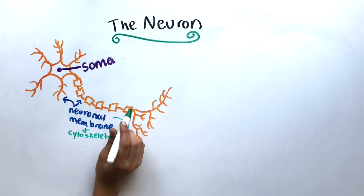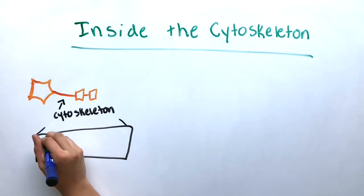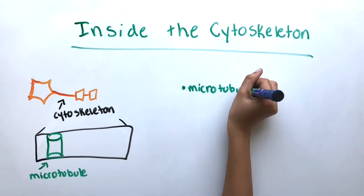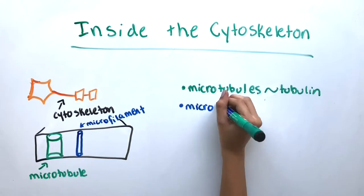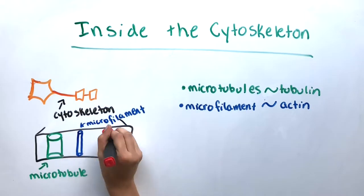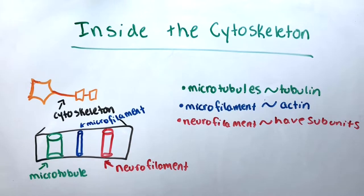The cytoskeleton, which gives structure to the neuron, consists of big 20 nanometer microtubules that contain the protein tubulin, 5 nanometer microfilaments that contain the protein actin, and 10 nanometer neurofilaments that resemble the bones of the skeleton and are mechanically strong.